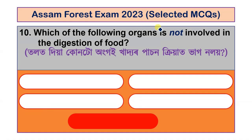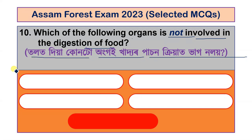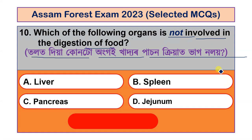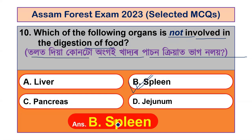Question number 10: Which of the following organs is not involved in the digestion of food? Options include liver, spleen, pancreas and jejunum. The correct answer is option B, spleen, as the spleen does not take part in digestion. The other three — liver, pancreas and jejunum — are involved in digestion.